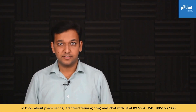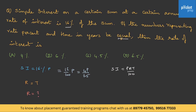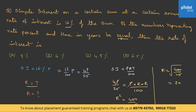Let's do a few more questions. Simple interest on a certain sum at a certain annual rate is 16% of the sum. If the numbers representing the rate percent and time in years are equal, what is the rate of interest? SI = 16% of P = 4P/25. Since R = T, using SI = PRT/100: 4P/25 = P × R²/100. Cancelling P: R² = 400/25 = 16, so R = 4%. Answer: option A.